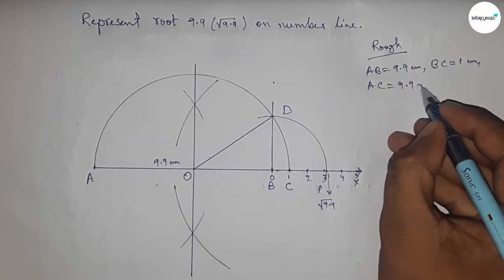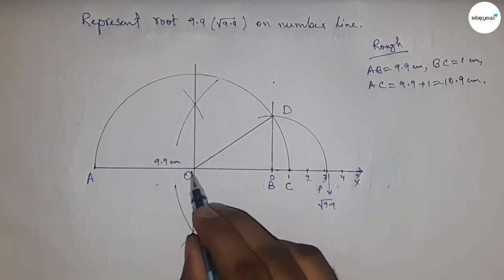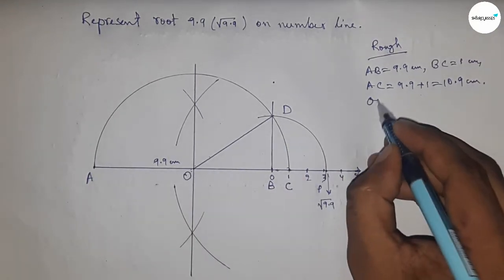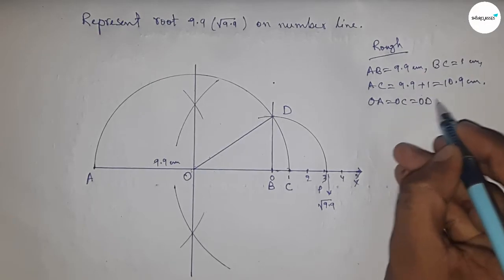So AC equal to 9.9 plus 1, so this is 10.9 centimeter. Now radius OA, OC and OD equal to 10.9 by 2 centimeter.